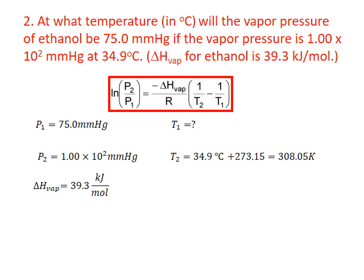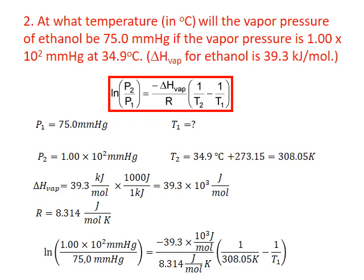The enthalpy of vaporization is given as 39.3 kilojoules per mole. All of our enthalpies should be in joules per mole, so we convert this to joules by multiplying by a thousand to give us 39.3 times 10 to the third joules per mole. R is the ideal gas constant at 8.314 joules per mole kelvin. We substitute all of these into the two-point form of the Clausius-Clapeyron equation.